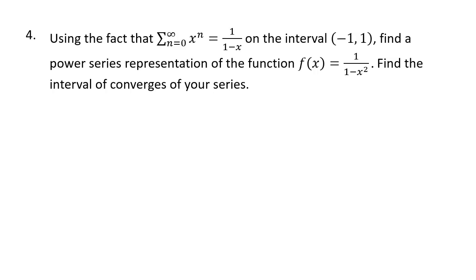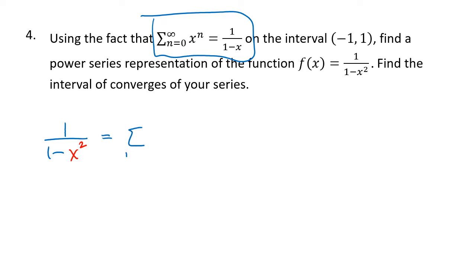One application of power series is finding a power series to represent different functions. The first approach is to substitute into our geometric series formula: 1 over (1-x) equals the sum from n=0 to infinity of x to the n, which converges when x is between -1 and 1. Here we can plug in x squared: replacing x with x² gives us 1 over (1-x²) equals the sum from n=0 to infinity of x to the 2n. The question is which values of x make that formula work — what's the interval of convergence?